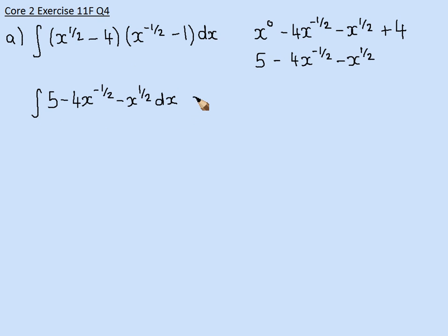So there's my integral I'm now going to work out. Now, when I integrate 5, I get 5x. When I integrate minus 4x to the minus 1 half, I get minus 4x to the half, adding 1 to the power, and then divide that by 1 half, dividing by the new power.